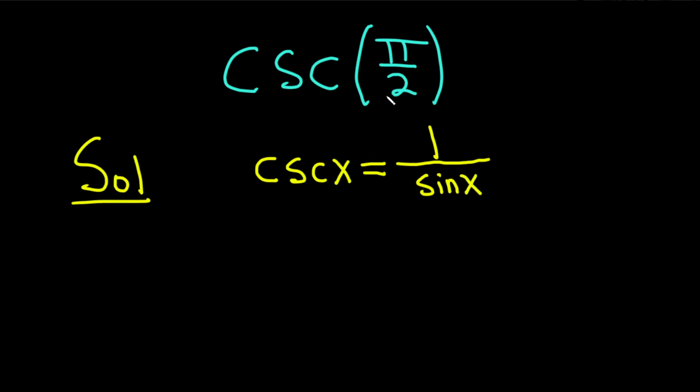For us, x is pi over 2, so we have that the cosecant of pi over 2 is equal to 1 over the sine of pi over 2.